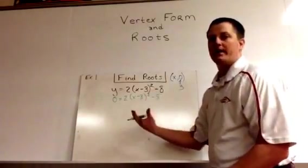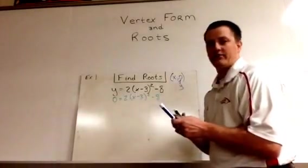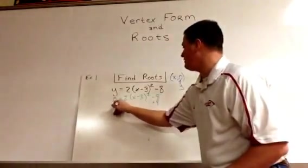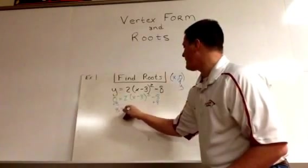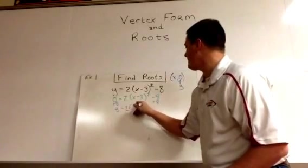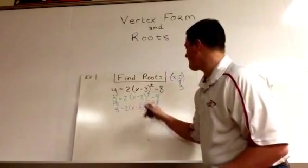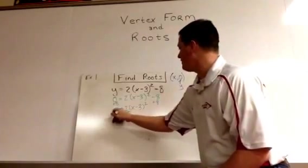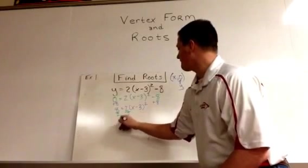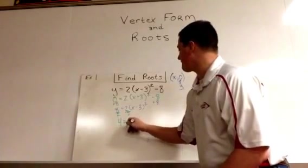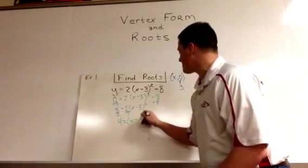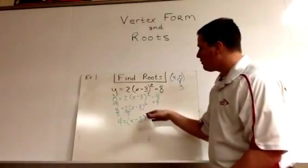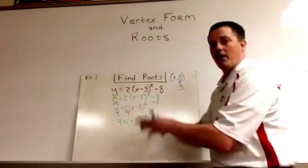From this problem we can now solve to find the x values. Add 8 on both sides. Divide by 2 on both sides. At this point we've gotten rid of all the math except for the square and the minus 3, all the math on the outside.